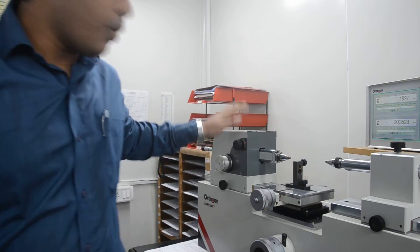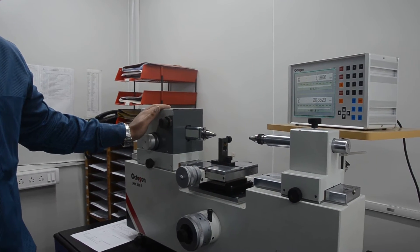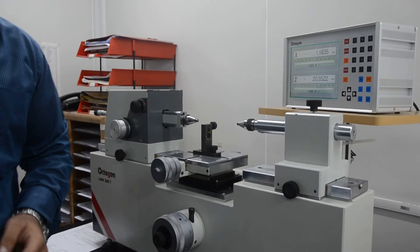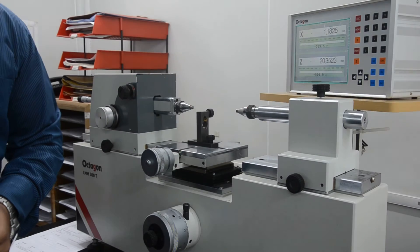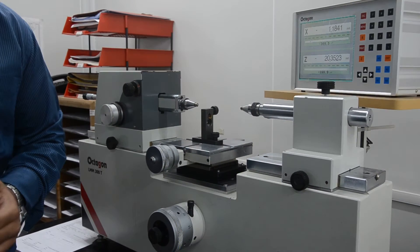And this is our master, that is universal length measuring machine. This machine is used to calibrate many instruments like plain plug gauge, thread plug gauge, thread ring gauge, plain ring gauge, snap gauge and also the plunger dial gauge.